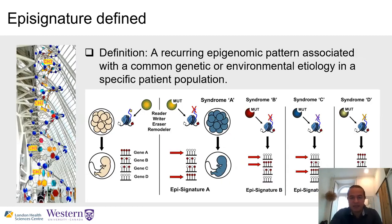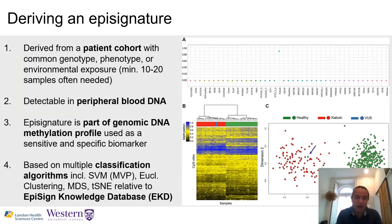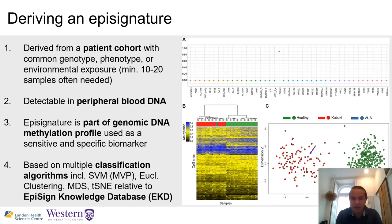An epi-signature is defined as a recurrent epigenomic pattern associated with a common genetic or environmental etiology in a specific patient population. To derive one, we start with a patient cohort sharing a common genotype, phenotype, or environmental exposure — typically 10 to 20 samples to initiate analysis. The analysis is performed in peripheral blood, and the epi-signature is a portion of the genome-wide methylation profile detectable in those conditions, analyzed using sophisticated classification algorithms including support vector machines and machine learning techniques, reliant on our large EpiSignology reference database.